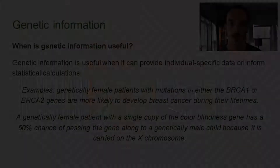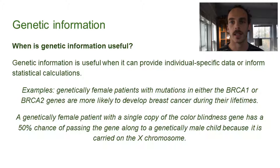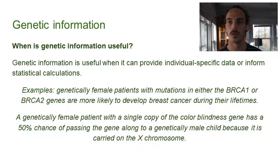So firstly, genetic information. When is genetic information useful? Genetic information is useful when it can provide individual-specific data or inform statistical calculations. In the first example, we have a female patient who has either the BRCA1 or the BRCA2 gene, which leads to an increased risk of developing breast cancer during their lifetime. Similarly, a genetically female patient with a single copy of the colorblindness gene has a 50% chance of passing the gene along to a genetically male child because it is carried on the X chromosome.